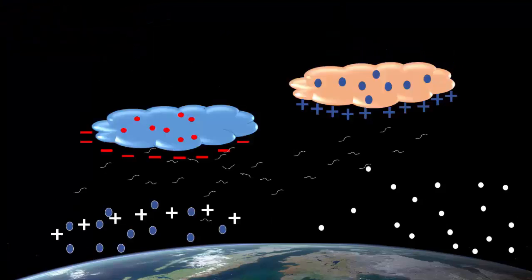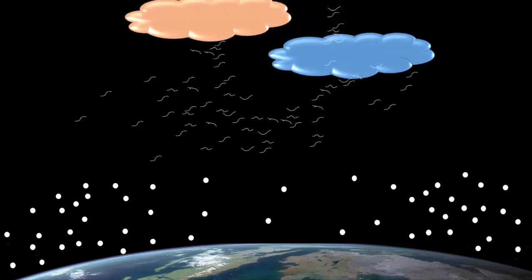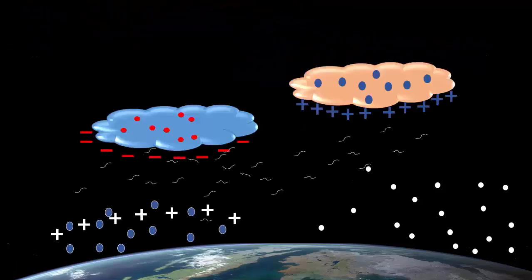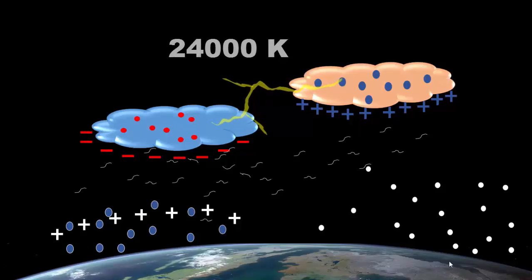When the clouds come closer, the charges on the clouds discharge through the moisture between them. This electric discharge results in lightning and thunder. Lightning heats up the air to a temperature of about 24,000 Kelvin.